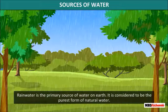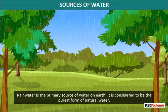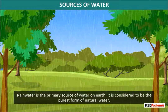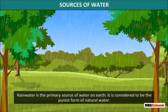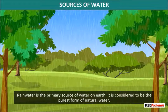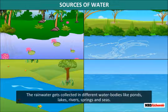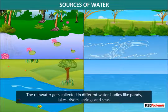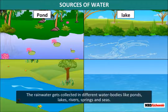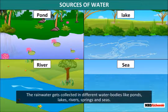Rainwater is the primary source of water on earth. It is considered to be the purest form of natural water. The rainwater gets collected in different water bodies like ponds, lakes, rivers and seas.